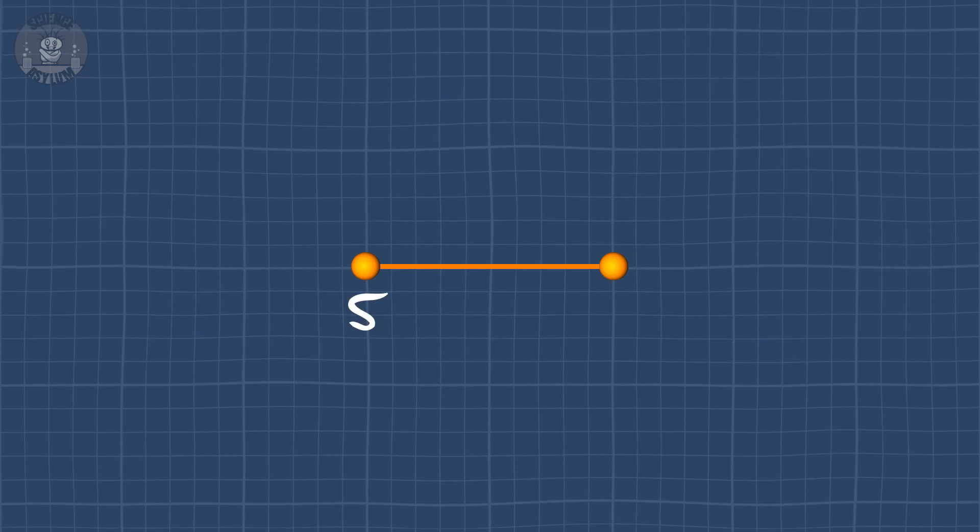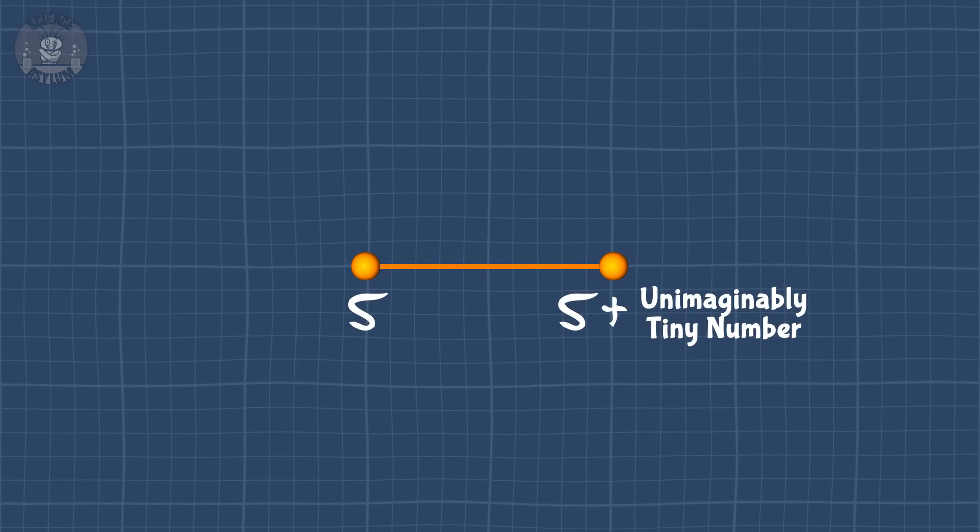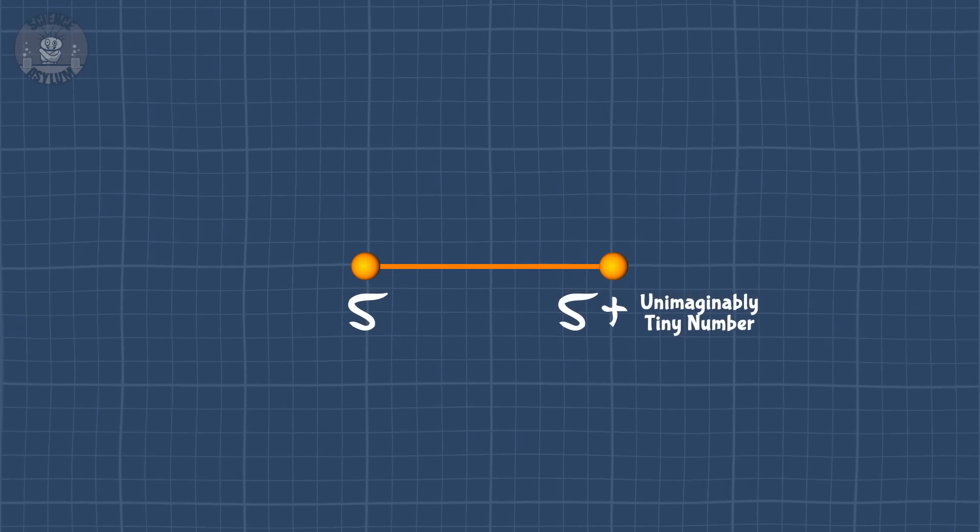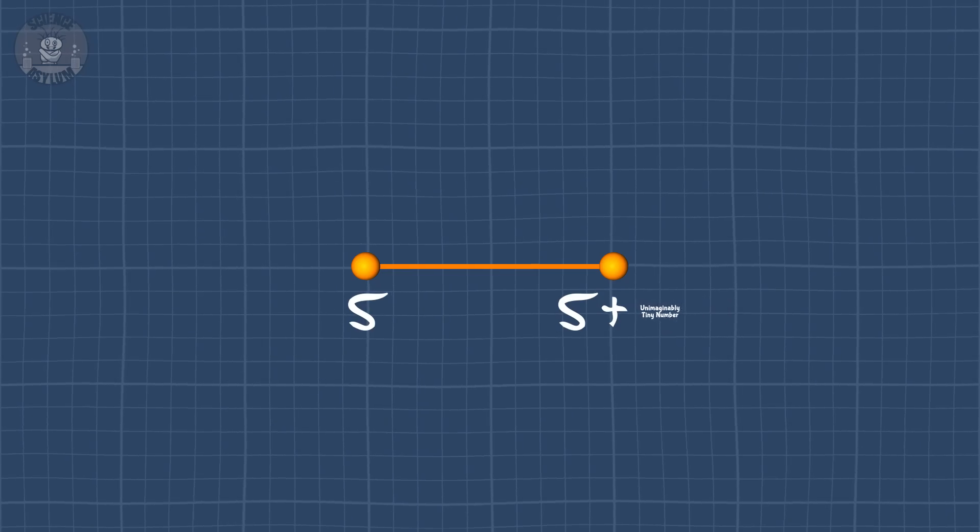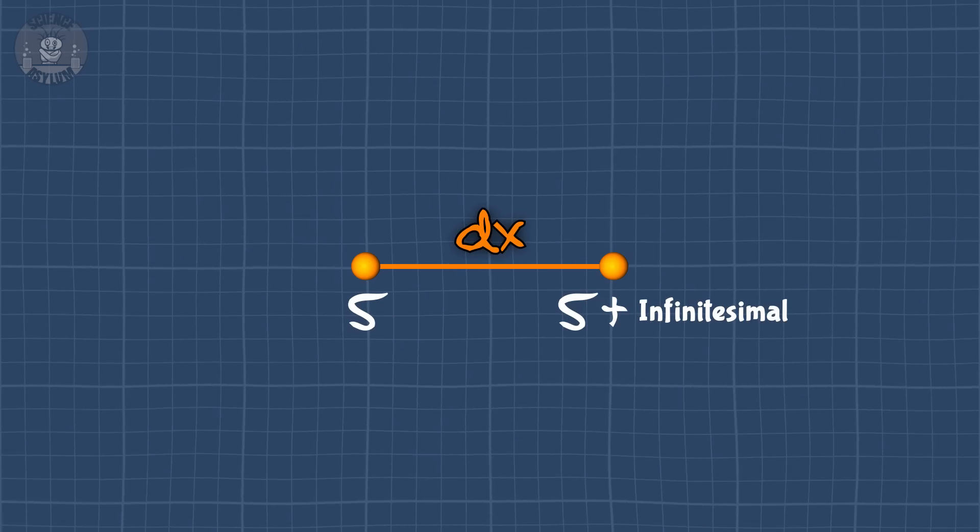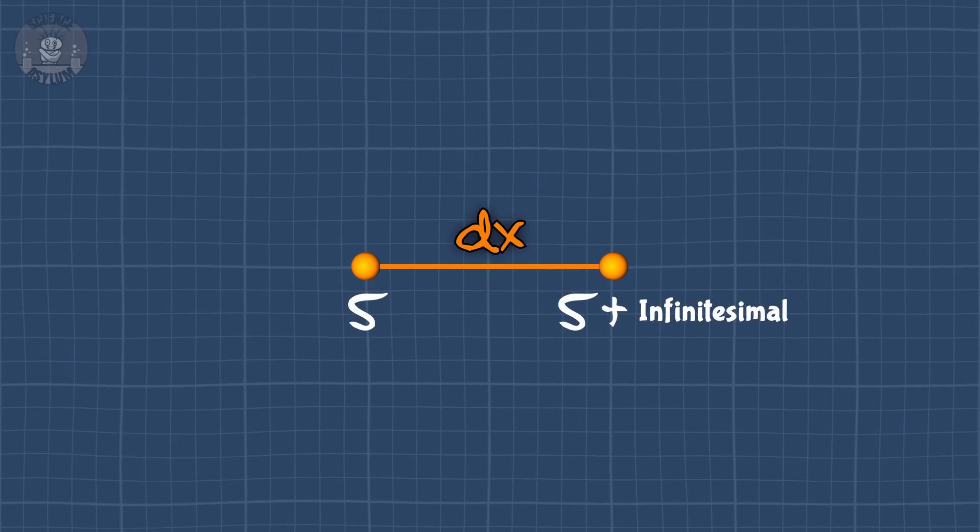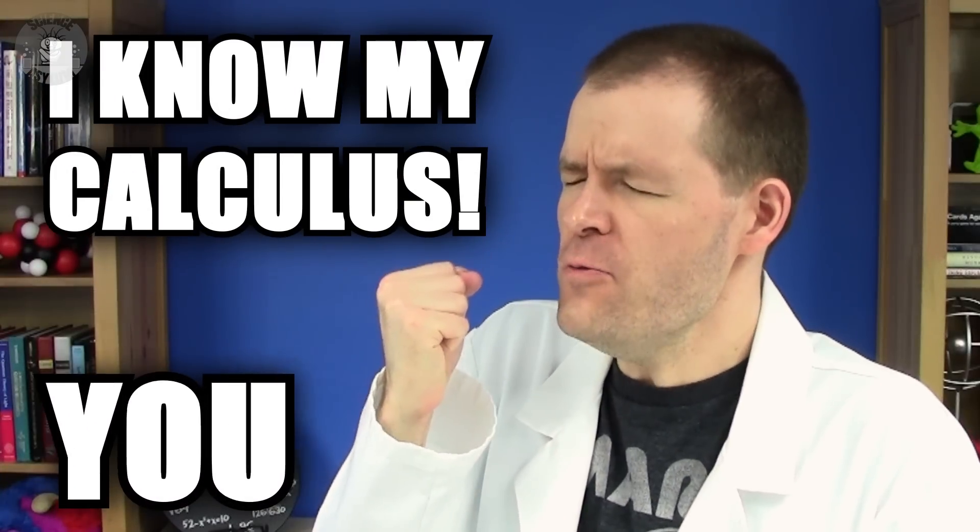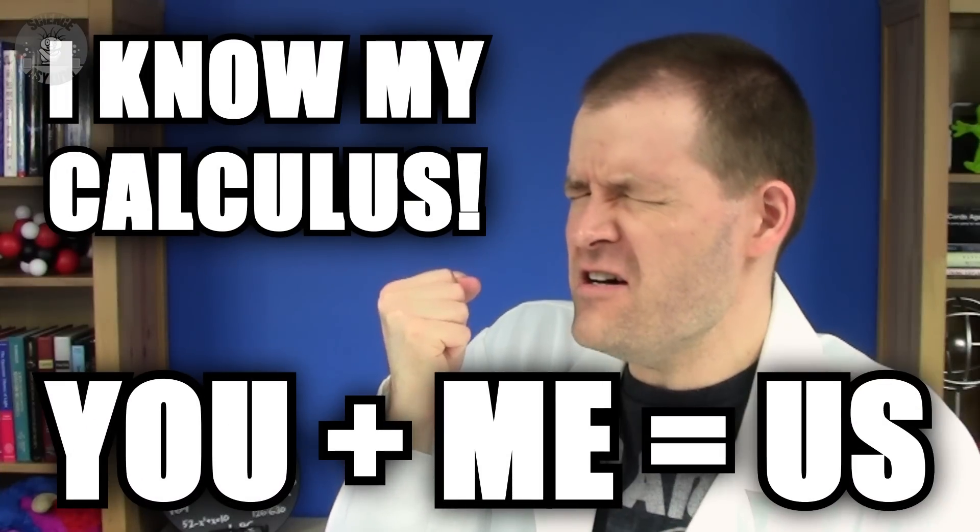If we keep this up, we can get closer and closer and closer until the points are at 5 and 5 plus an unimaginably tiny number. So tiny, it's not even useful to label it as a number anymore. We call it an infinitesimal and label it dx. Welcome to Calculus. I know my calculus! U plus me equals us!